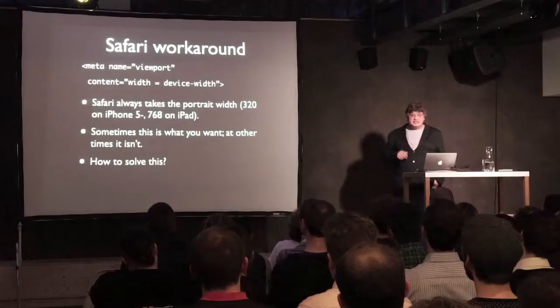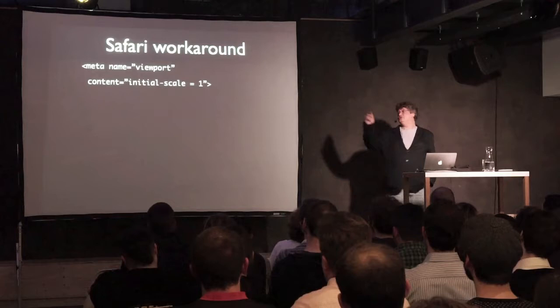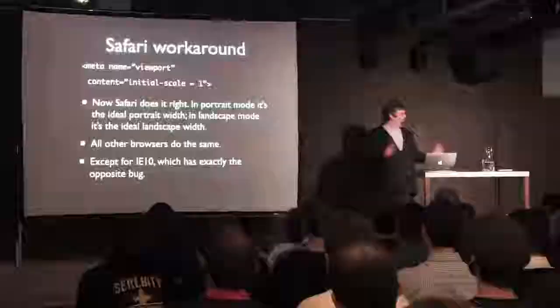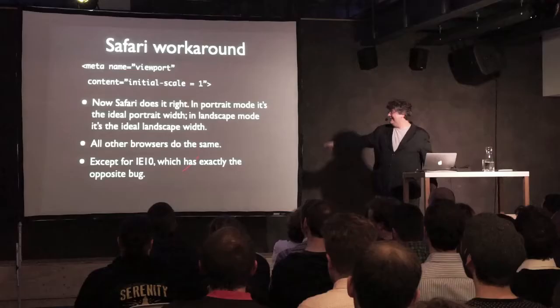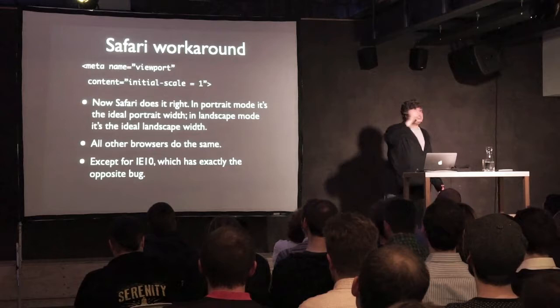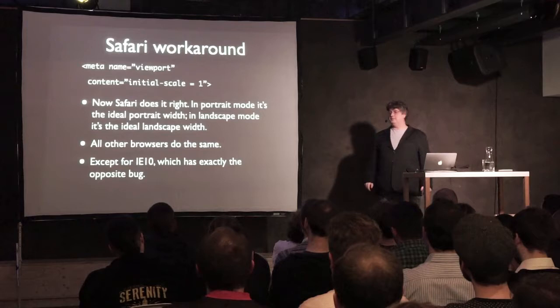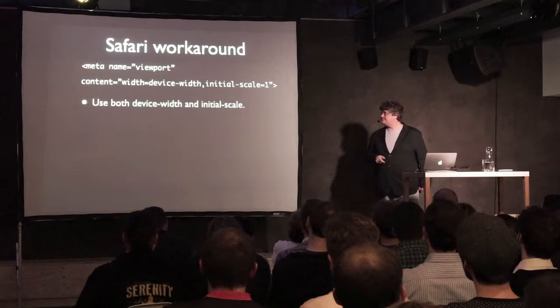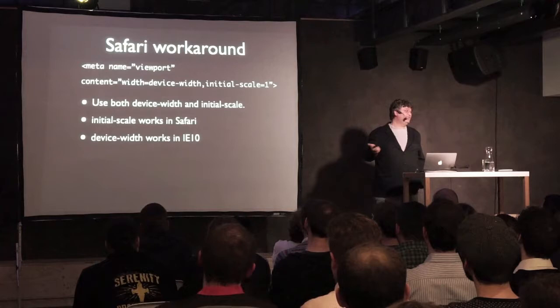How can we solve this problem? Fortunately the solution is extremely simple: use initial-scale=1 instead. When you use that, Safari gives 320 in portrait and 480 in landscape, and all other browsers do the same — except Internet Explorer 10, which has exactly the opposite behavior. In IE10, initial-scale=1 gives you the portrait width even in landscape, but width=device-width uses portrait or landscape as applicable. The IE10 bug was solved in IE11. The Safari bug has not been solved yet. One point for Microsoft.